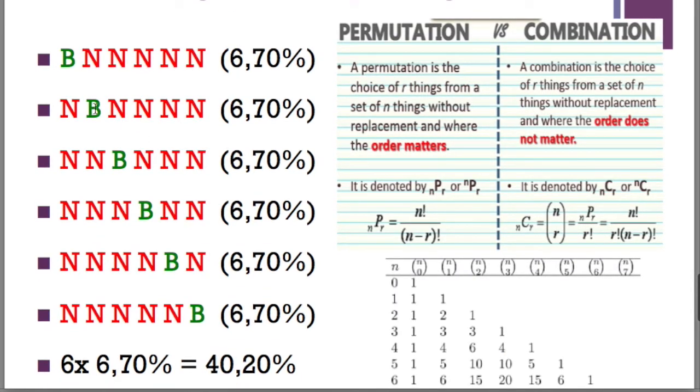Here is also one bonus round within six spins. Here is also one bonus round within six spins. Here as well, here and here. Six times 6.70% or 40.20%.